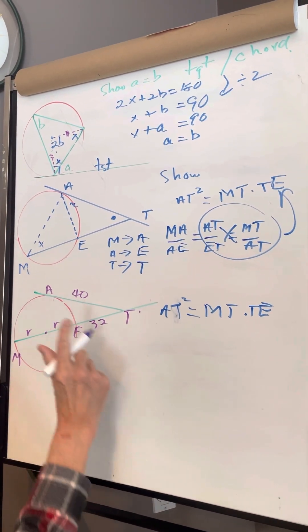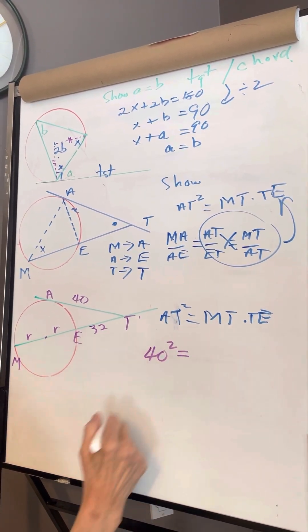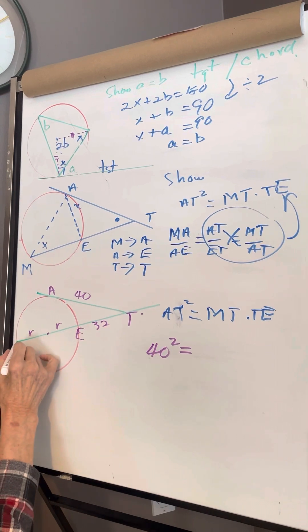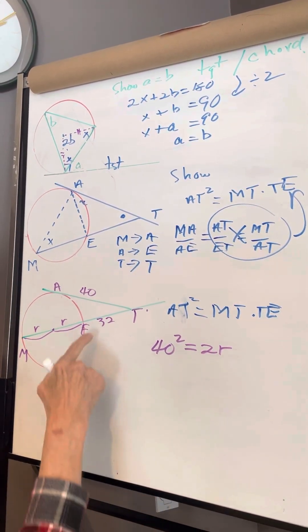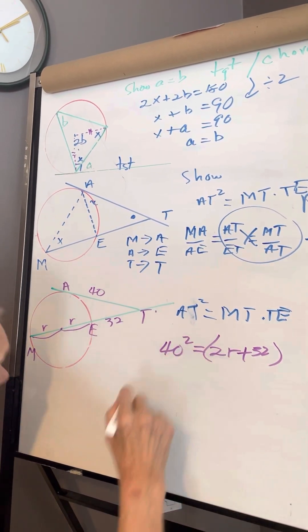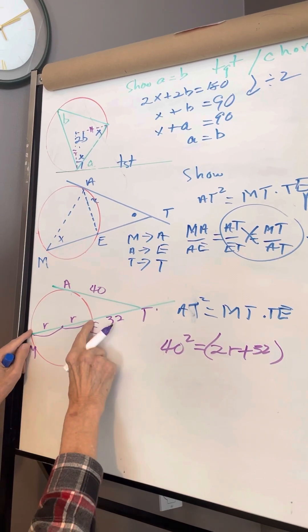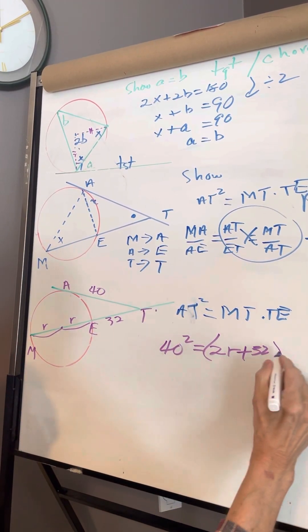So what's AT? AT is 40. So 40², and MT is r + r, which is 2r, plus 32. That's MT. Times ET, which is 32.